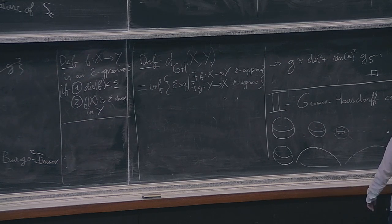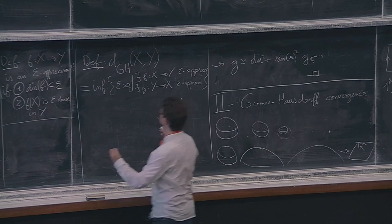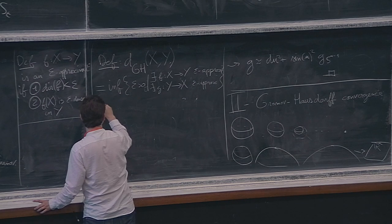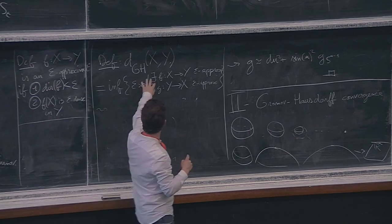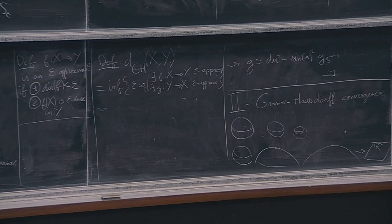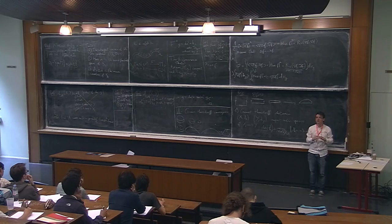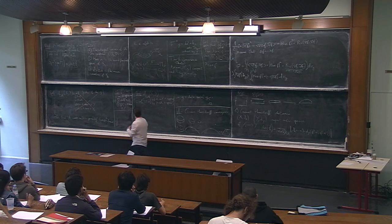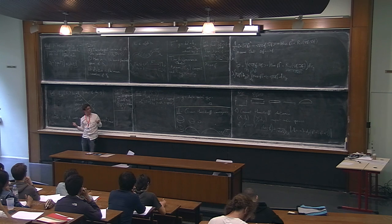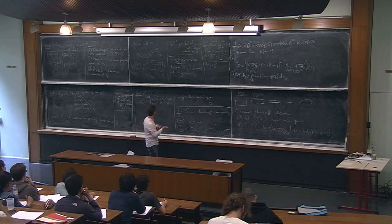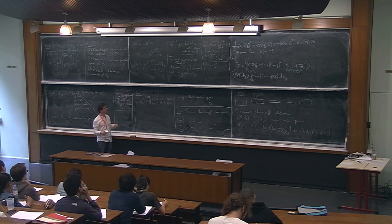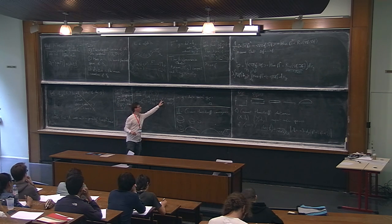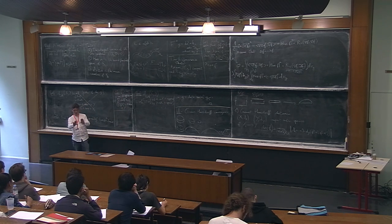This is a distance on the set of compact metric spaces modulo isometry. If you have an isometry from X to Y it will be an ε-approximation for every ε, so the distance is zero if and only if they are isometric. One can prove that when you have a sequence of ε-approximations with ε → 0 between two fixed metric spaces, you can extract an isometry in the limit.